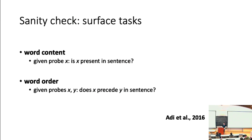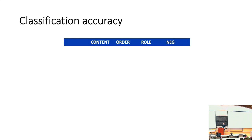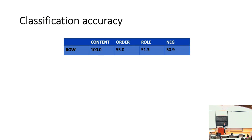Our probing tasks are giving us patterns that look essentially like what we want to see. For the bag-of-words sanity check: on the word content task — the one task we'd expect bag-of-words to handle — it's at 100% accuracy. For the other three tasks requiring word order, it's roughly at 50%, roughly chance. This tells us we've managed to control our data lexically to the point we want, and that's what the bag-of-words sanity check tells us.